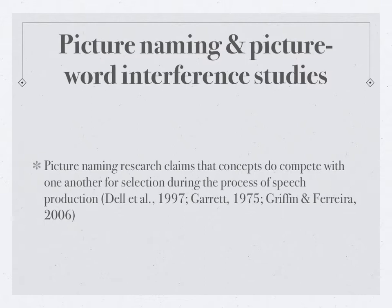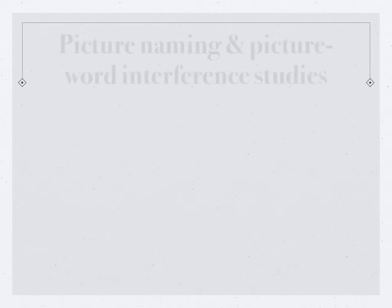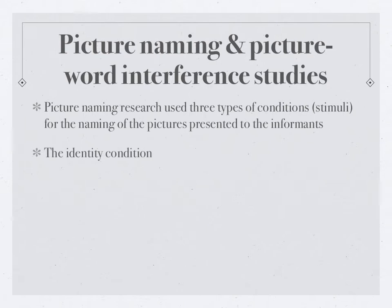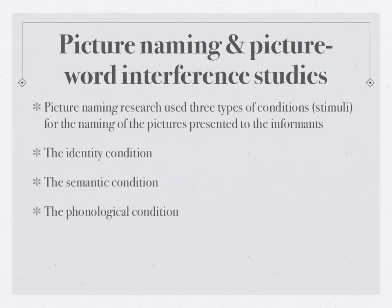So how do they know this? Picture naming research used three types of conditions — stimuli for the naming of the pictures presented to the informant. They show informants pictures, but those pictures are not random — they are very well organized, selected, and chosen. You have words organized on the basis of identity condition, others based on the semantic condition, and others based on the phonological condition — for example, house, mouse. On the basis of all this, they try to determine what goes on in the mind.